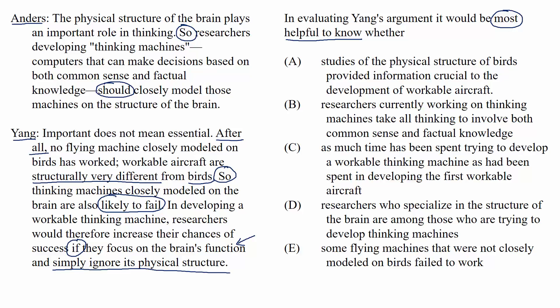A reads: studies of the physical structure of birds provided information crucial to the development of workable aircraft. As a question: did studies of the physical structure of birds provide information crucial to the development of workable aircraft? If the answer were yes, that would weaken the argument — Yang doesn't want to pay attention to structure, but it would then be helpful to look at the brain's structure. If the answer were no, that would strengthen the argument, giving Yang a better case for ignoring the brain's physical structure. So this is our answer — on test day, we'd select it and move on.